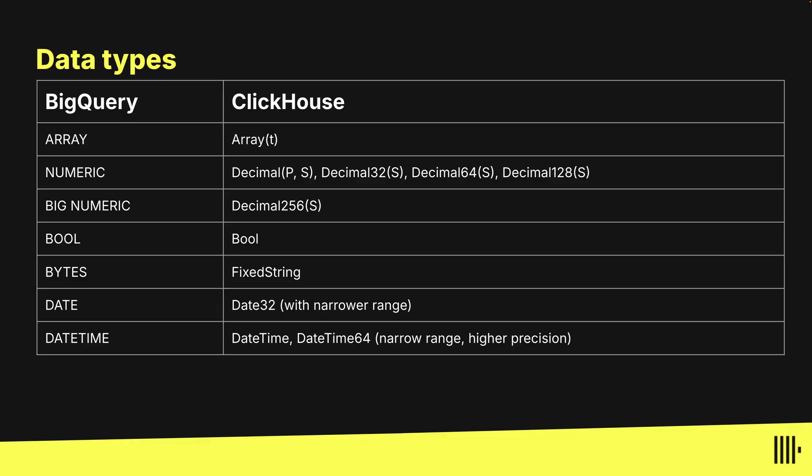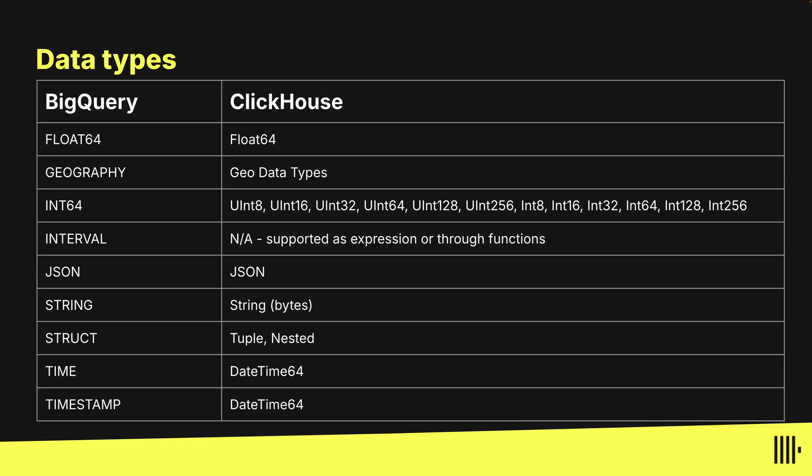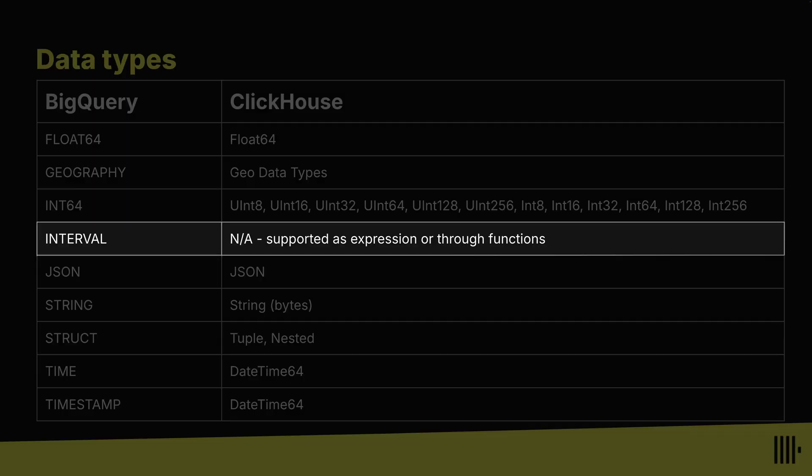Let's have a look at data types. There's a direct equivalent for nearly all BigQuery types, but they may sometimes have slightly different names. One exception is the interval type — ClickHouse doesn't have a type for storing intervals, but you can work with intervals using expressions and functions.